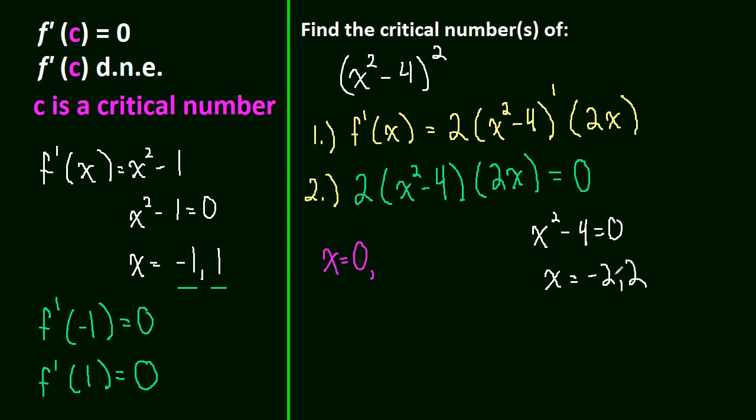Right? Hopefully, you can see that answer pretty quickly. If not, you can use the difference of squares to solve that, or you can just take the square root of 4 plus or minus 2. Okay. So, we got our critical numbers. 0, negative 2, and 2. That's it. That's all we had to do. We took the derivative, set it equal to 0, and we got our critical numbers.